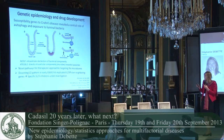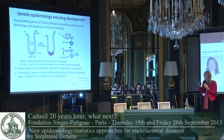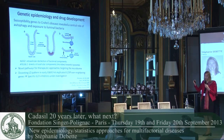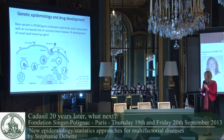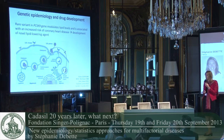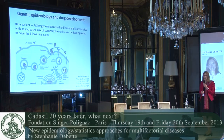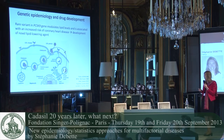For drug development: genetics of Crohn's disease have highlighted the big importance of autophagy in this disorder, opening avenues for new therapeutic strategies. More concretely, rare variants in the PCSK9 gene were shown to modulate lipid levels and to be associated with coronary artery disease, and this has led to the development of novel lipid-lowering agents.